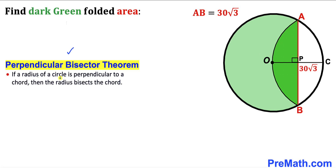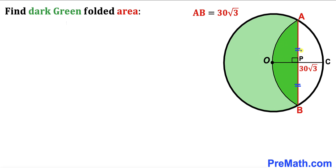According to this theorem, if a radius of a circle is perpendicular to the chord, then the radius bisects the chord. Here, OC is the radius of the circle, AB is the chord, and this angle is 90 degrees. So segment AP is equal to segment BP. Furthermore, since these two regions are identical, segment OP is equal to segment PC.